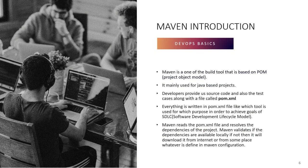Maven is a build tool based on POM — Project Object Model — mainly used for Java-based projects. Developers provide source code, test cases, and a pom.xml file. Everything is written in pom.xml, like which tool is used for which process. Maven reads pom.xml, resolves project dependencies, and validates if dependencies are available locally. If not, it downloads them from the internet, stores them locally, and all plugins defined in pom.xml get downloaded. For example, during compilation, required dependencies are downloaded first and then the compilation stage succeeds.